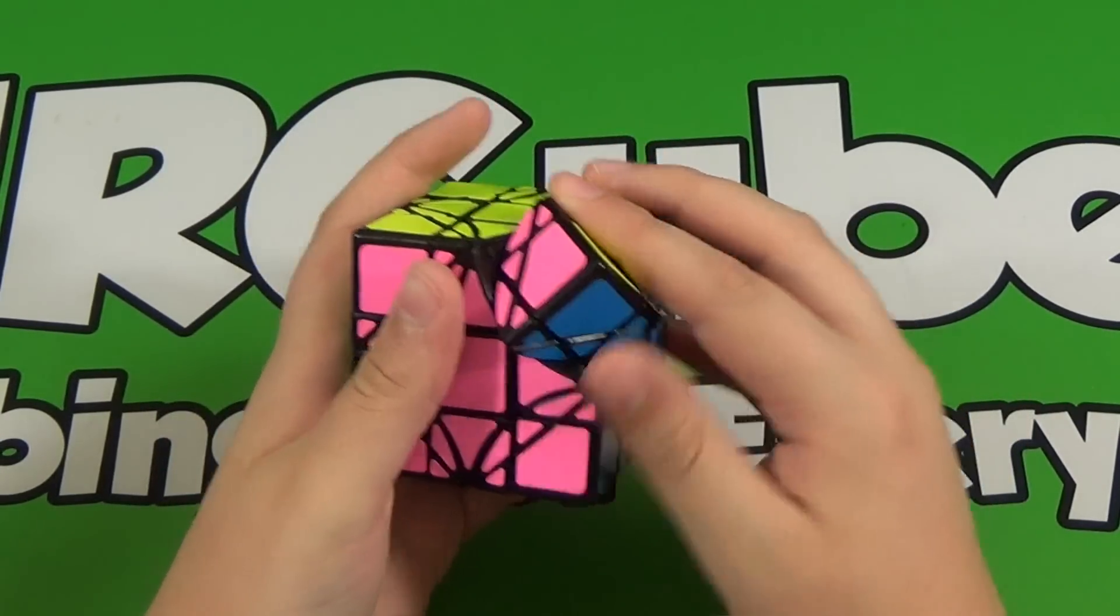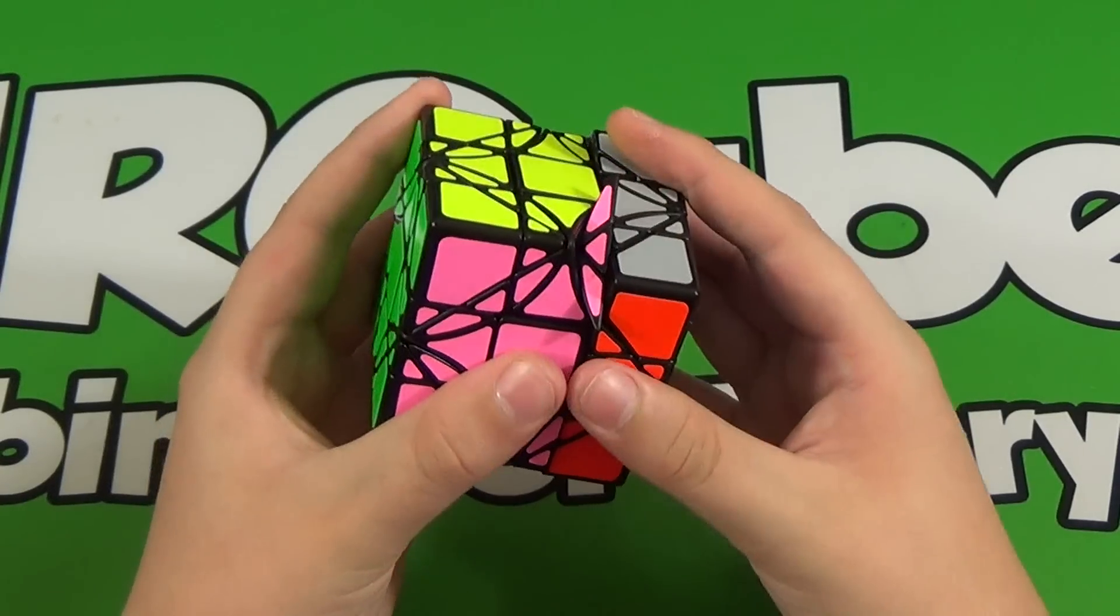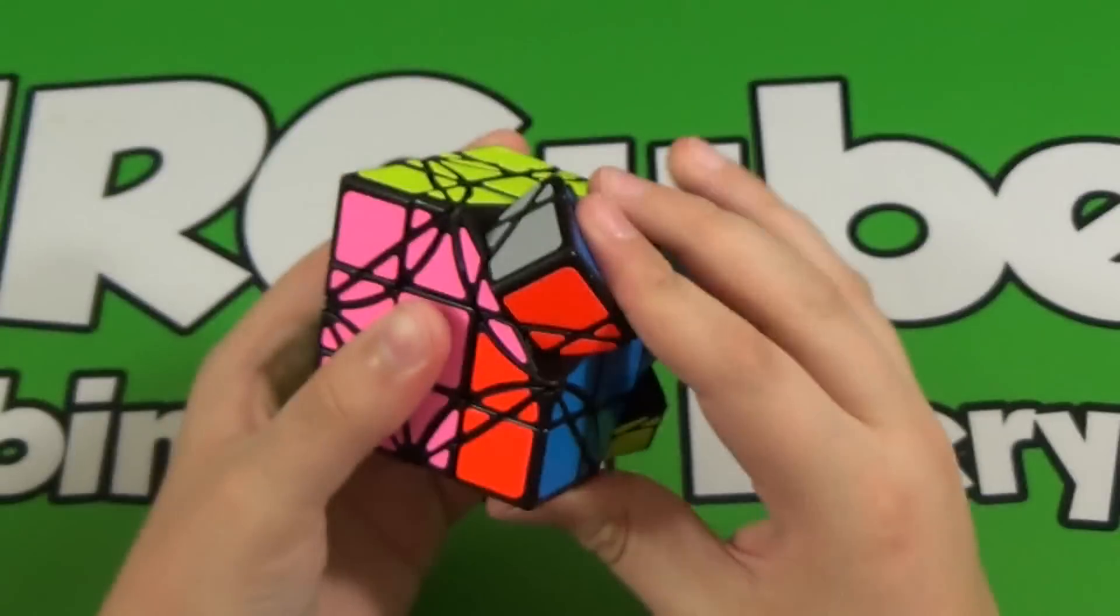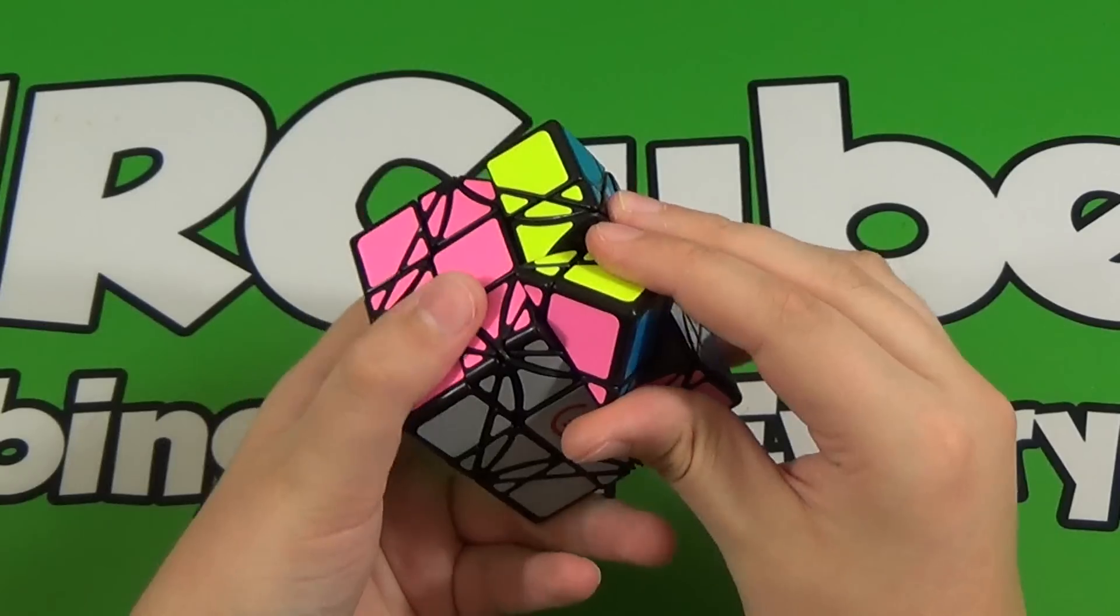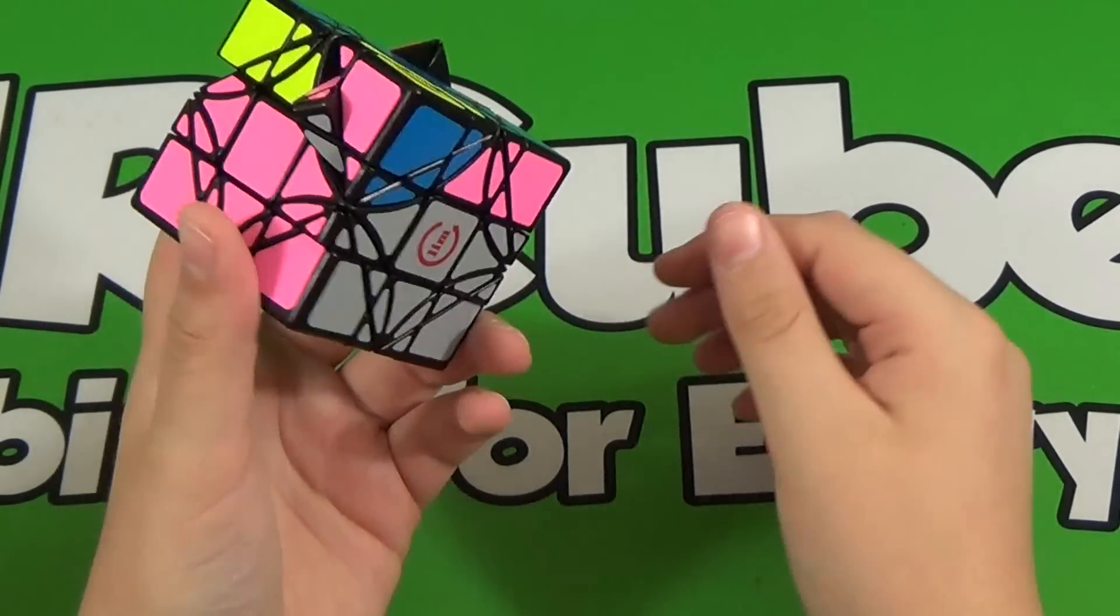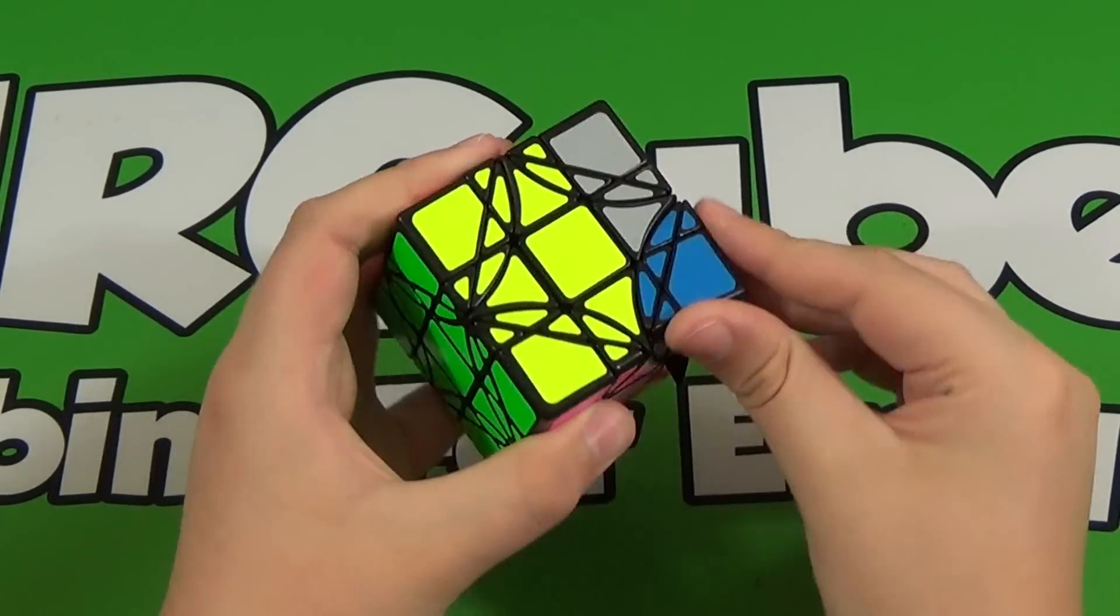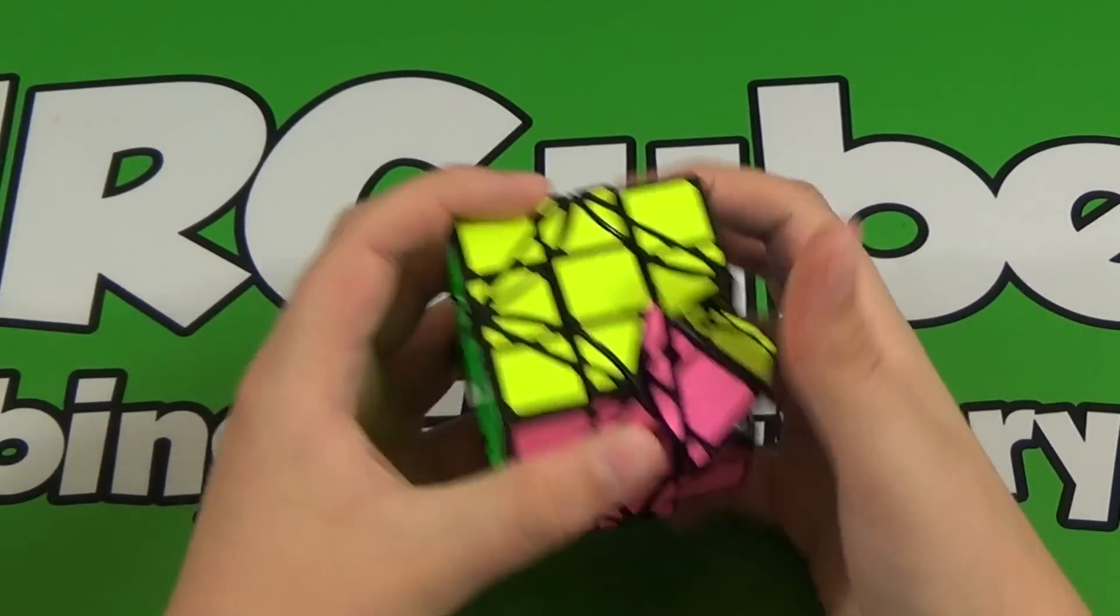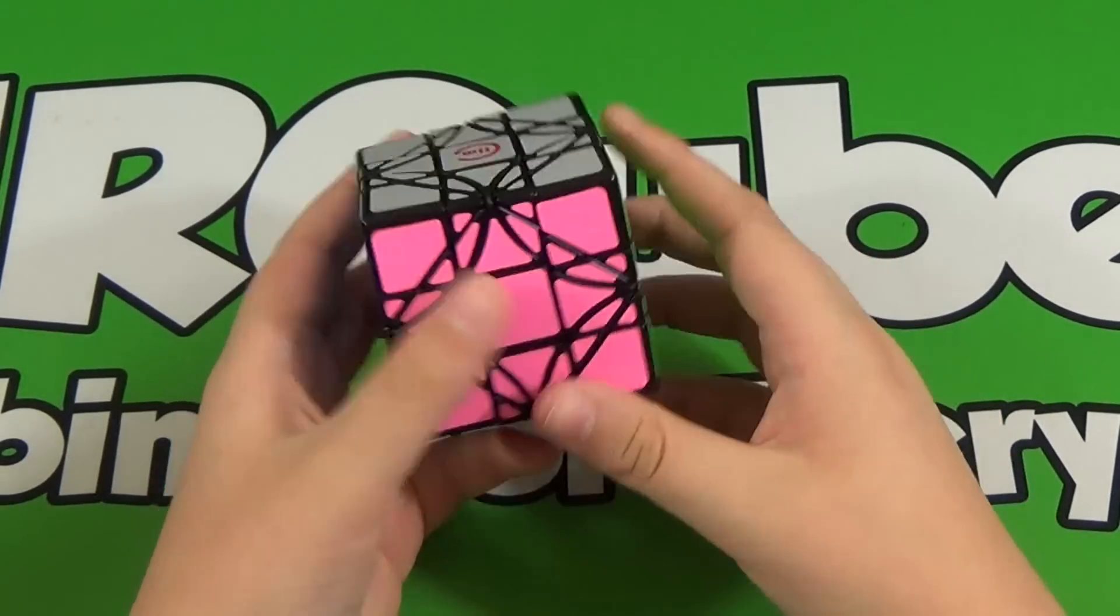This puzzle does not jumble, but as you can see it does shape-shift. And so it can lead to some pretty weird stuff. But like I said, it does not jumble because nothing gets bandaged. No matter how you move it, nothing will get bandaged together. And so since that's what jumbling does, it bandages things. And this does not bandage, this is not a jumbling puzzle, this is a shape-shifting puzzle.